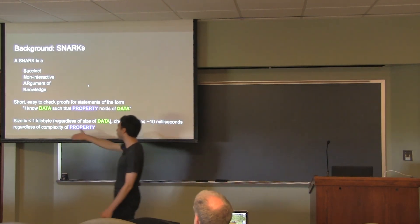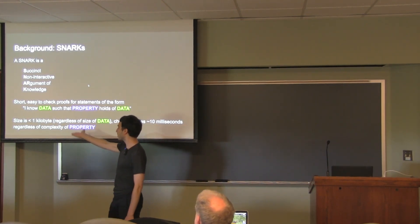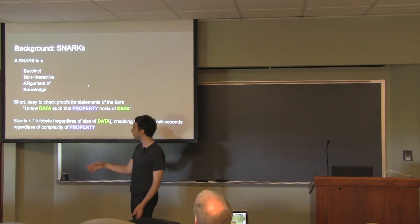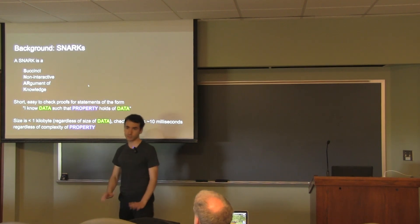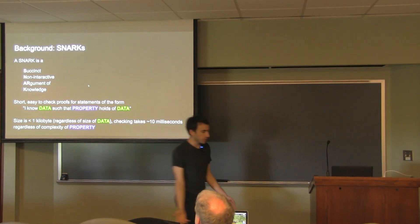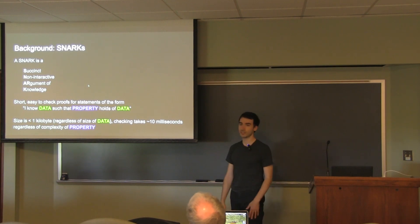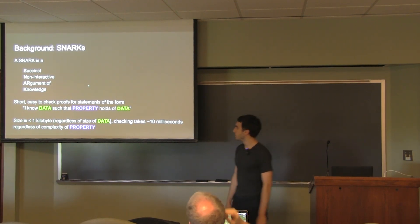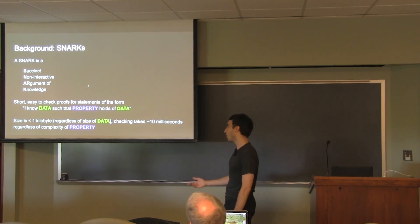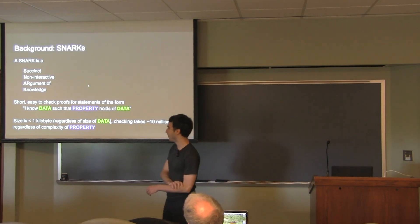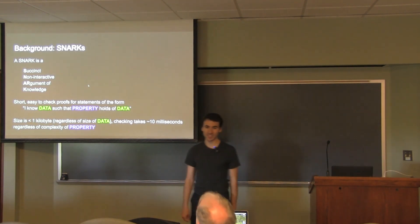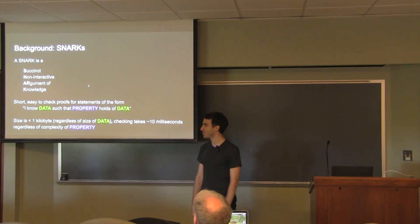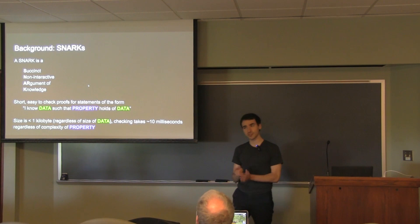These proofs are constant in the security parameter — essentially always less than a kilobyte. There's something called a rank-one constraint system — this is the machine model, like the assembly. A rank-one constraint is an equation of this form: a linear combination of variables, times another linear combination of variables, equals a linear combination of variables. The coefficients are in a finite field. Associated with this is the notion of a satisfying assignment — numbers to pick for all the variables so that when you plug them into the constraint system, it evaluates to true.